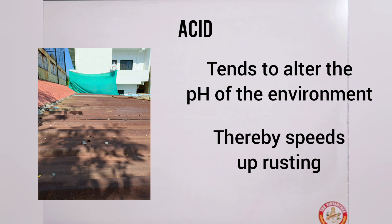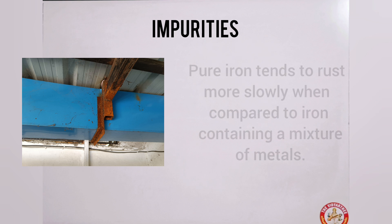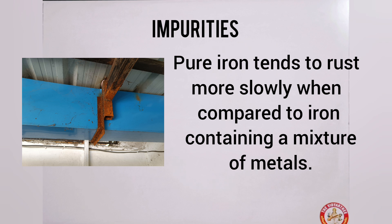When iron is exposed to conditions like acid rain, the rusting rate increases. Conversely, a higher pH inhibits the corrosion of iron. The fourth factor is the presence of impurities. If iron is in its pure form, the rusting process is delayed; however, impurities tend to speed it up.